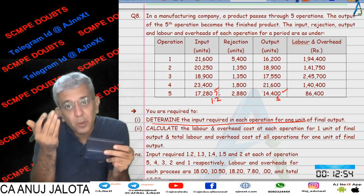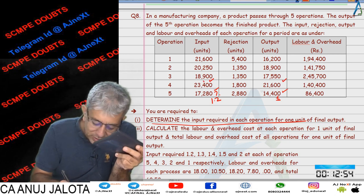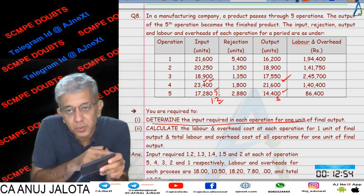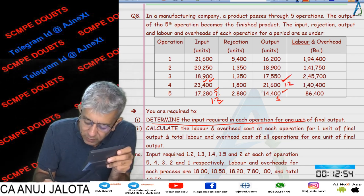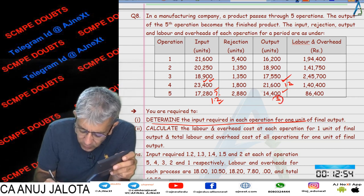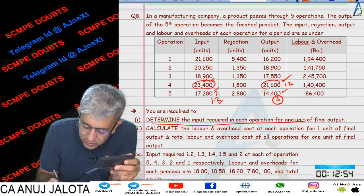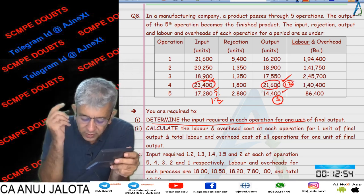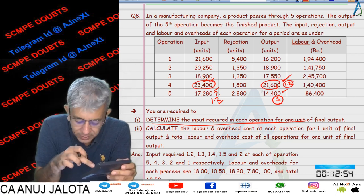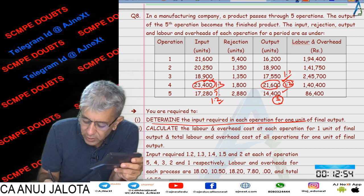Now we go backwards. We have 23400 as input and 21600 as output for the previous process. The output of this process should be the input of the next process. So if the next process input is 1.2, we compute: 1.2 × 23400 ÷ 21600, which gives 1.3. This 1.3 is the input figure for that process.